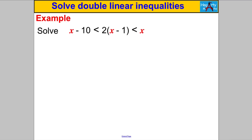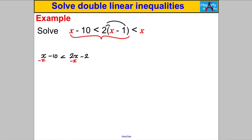Let's try another one — pause the video and have a go. Solve the left part: X subtract 10 is strictly less than 2x subtract 2, expanding the bracket. Leave X's on the right-hand side; subtract X and add 2 to both sides. X on the right is strictly bigger than negative 8.